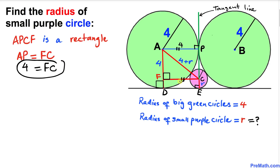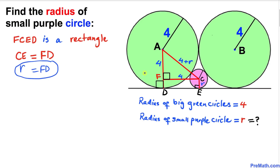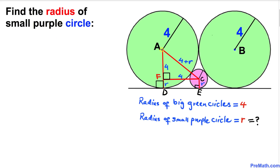Now let's focus on another rectangle, FCED. This is also a rectangle because its interior angles are each 90 degrees. By the definition of a rectangle, CE equals FD. We know that CE is lowercase r, so FD is also lowercase r.